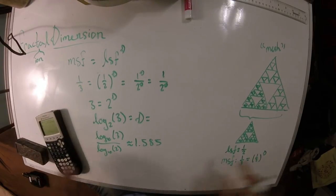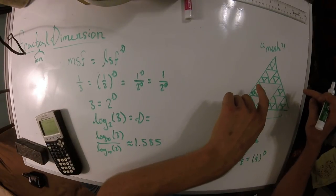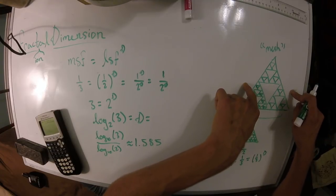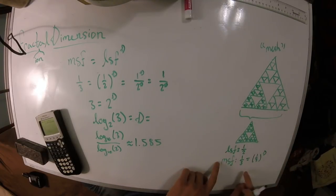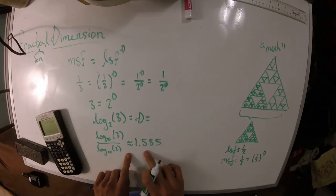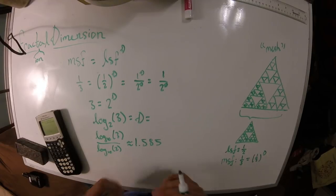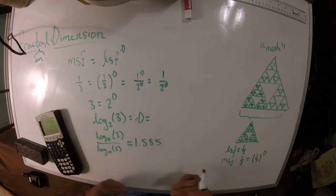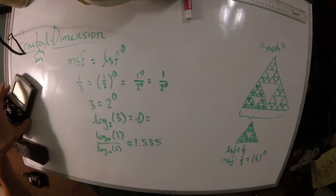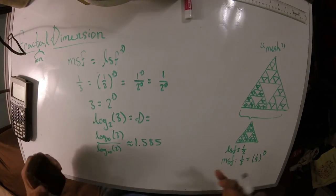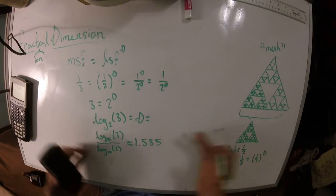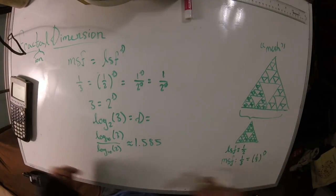So following the same logic as with our rod, cube, and square, the Sierpinski triangle has dimension 1.585 - greater than 1 but less than 2. That's one example of a fractal that displays this fractal dimension concept, which they all should.